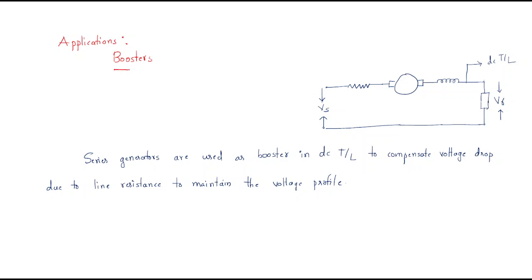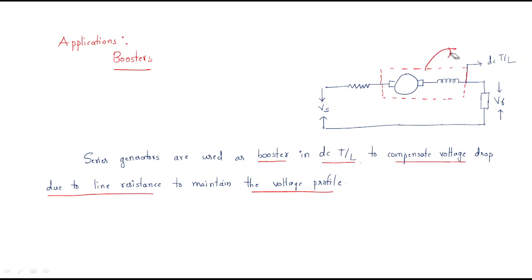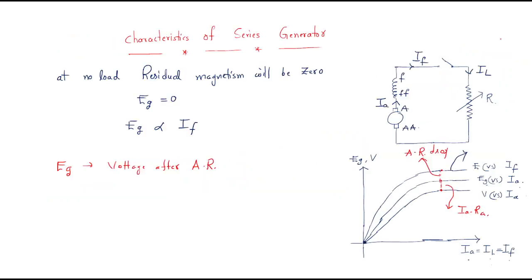The series generator is primarily used as a booster in DC transmission lines to compensate for the voltage drop due to line resistance. In DC lines, resistance drops are unavoidable; by connecting a DC series generator in series with the line, the voltage profile is maintained constant. This is the main application of the DC series generator, concluding our discussion of both DC shunt and series generator characteristics.